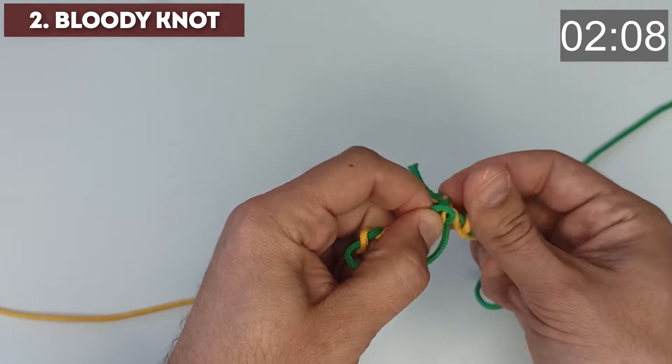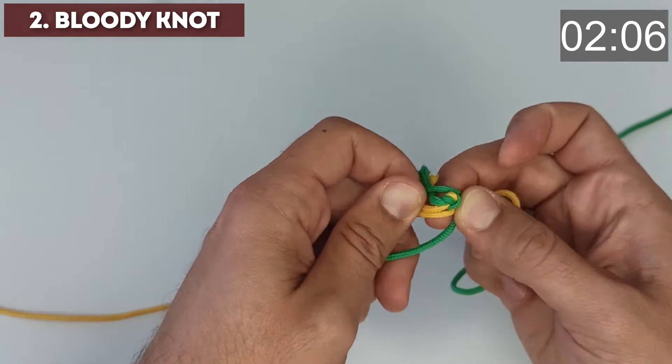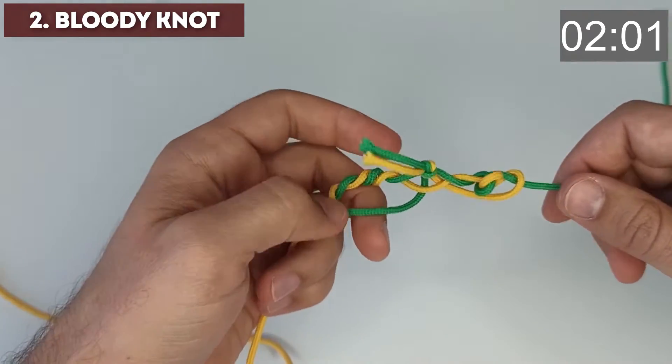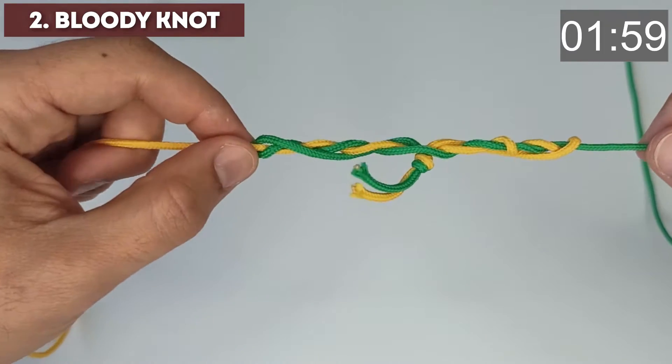Thread the temporary knot into the loop in the middle and tighten it neatly and evenly.